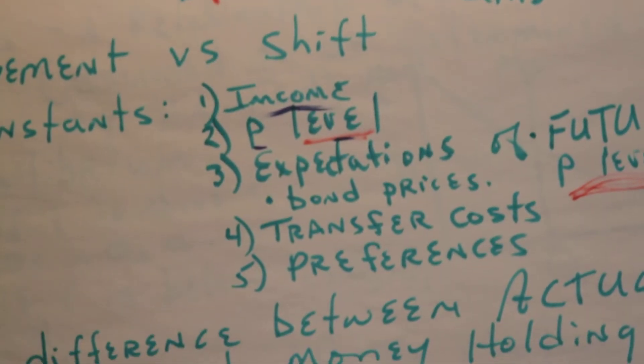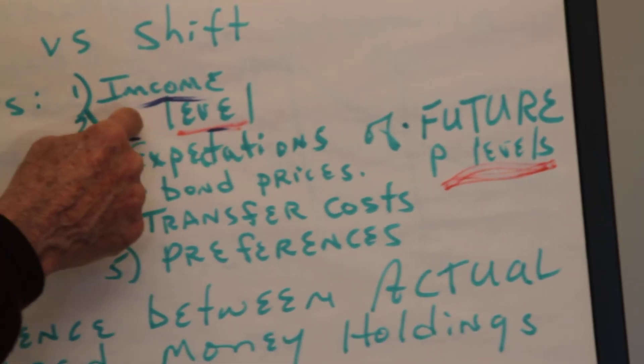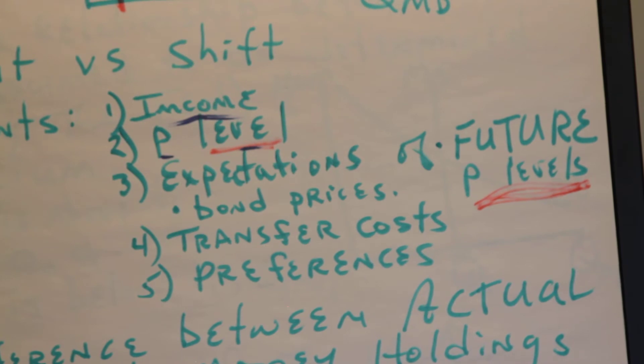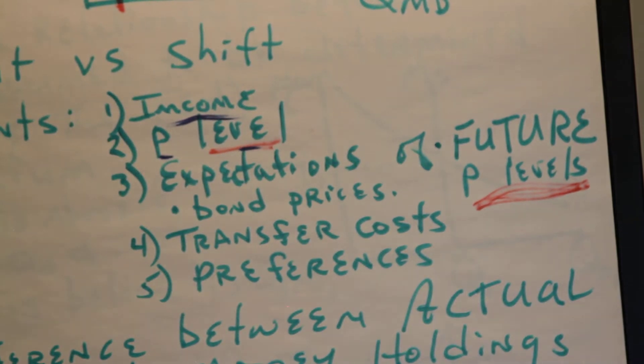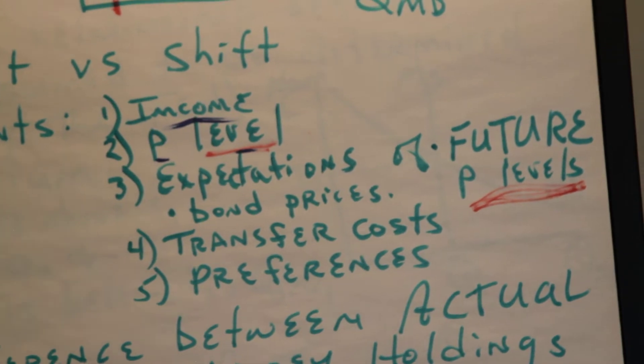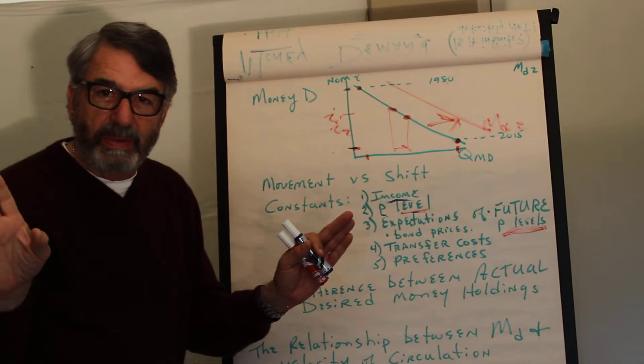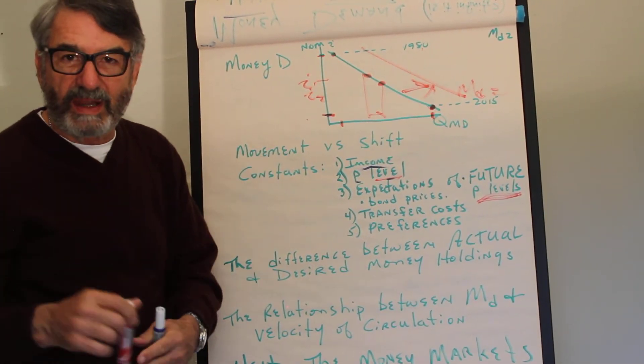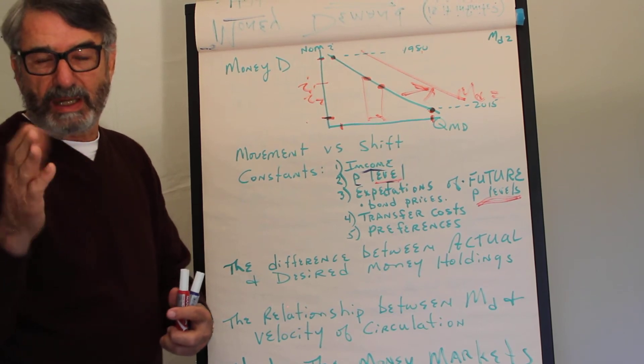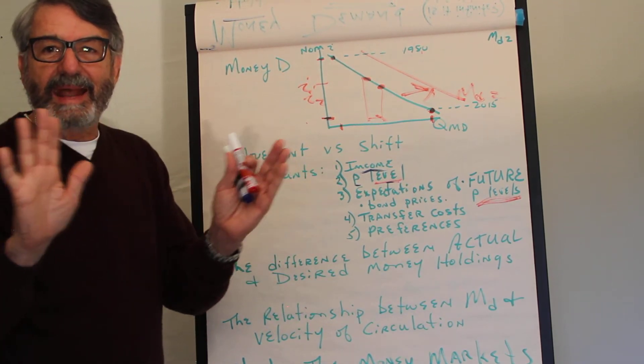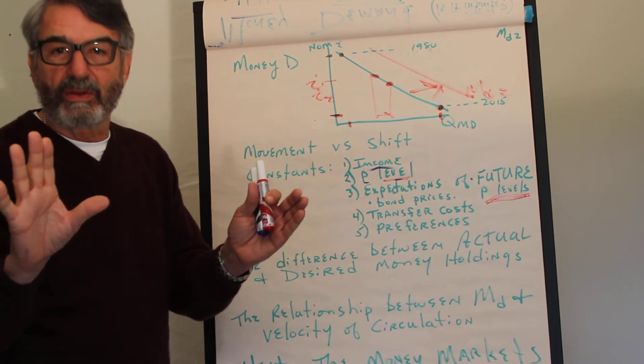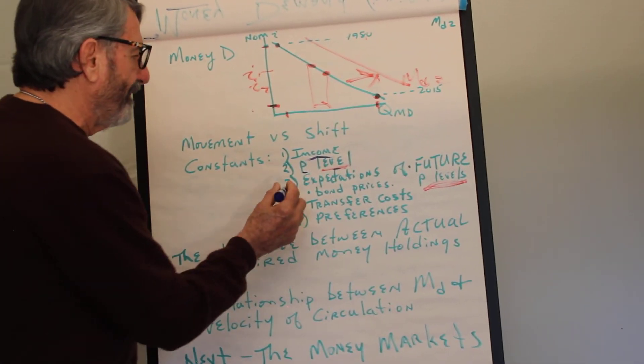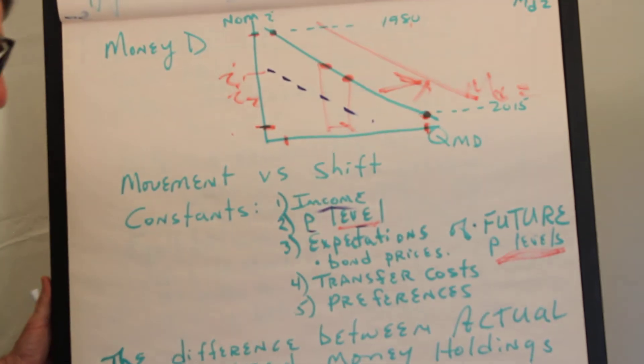Expectations of future price levels affect the quantity people want to hold. We are not talking about the current price level, we are talking about the future price level. If you expect inflation in the future, generally speaking you want to get out of money because money has a fixed nominal value. For every $100 bill that you have and for every $1,000 bond that you have, it doesn't matter what happens to the inflation, that's still going to be worth $10 or $100 or $1,000. And with the inflation, the purchasing power of those dollars goes down. So if you expect higher inflation in the future, you cut back on your money holdings.